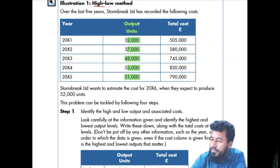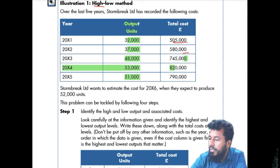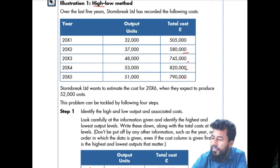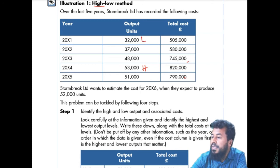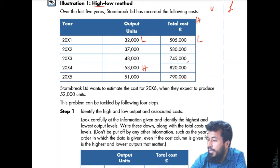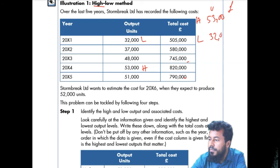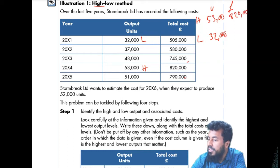The method works with outputs and costs. For example, these are your outputs and these are your costs. You need to find the highest output level and highest cost, or you can take the lowest. Here, this is the highest and 2011 is the lowest. The highest output is 53,000 units and the lowest is 32,000 units. Money-wise, for 53,000 units the cost is 820,000, and for 32,000 it is 505,000.